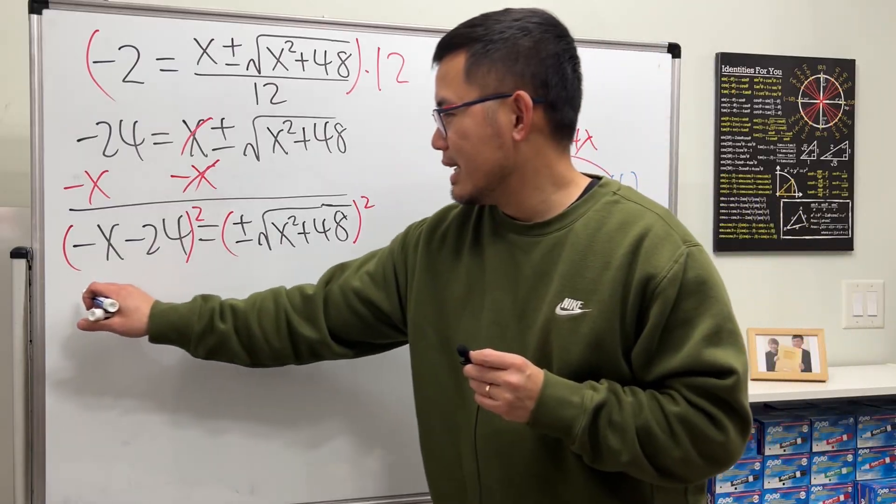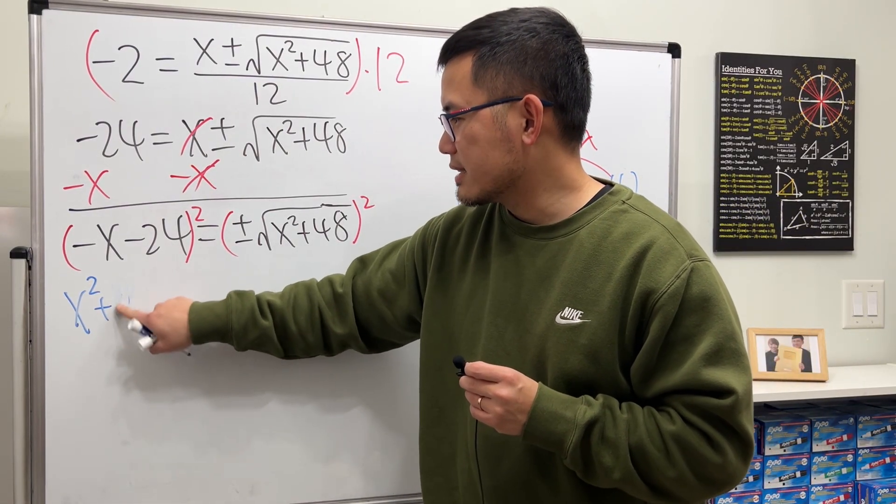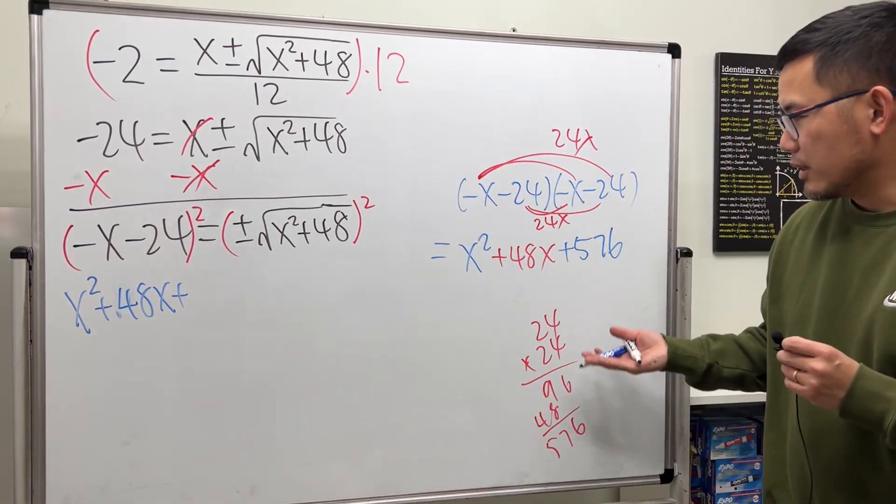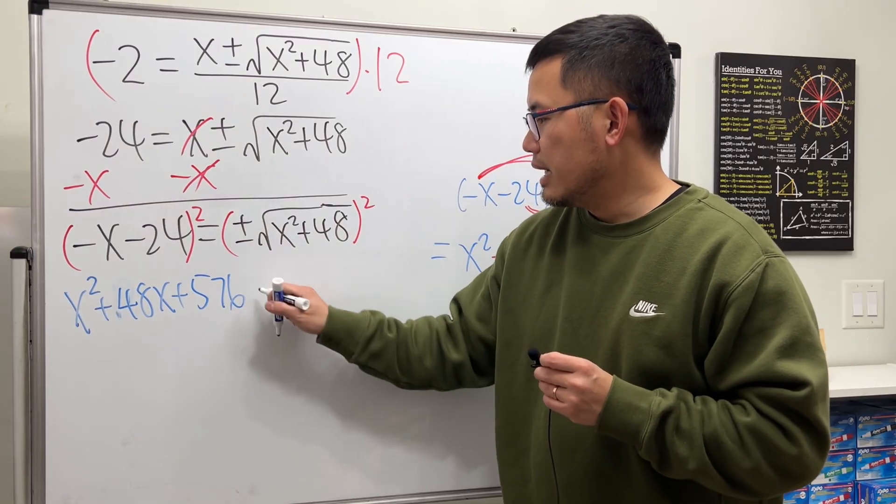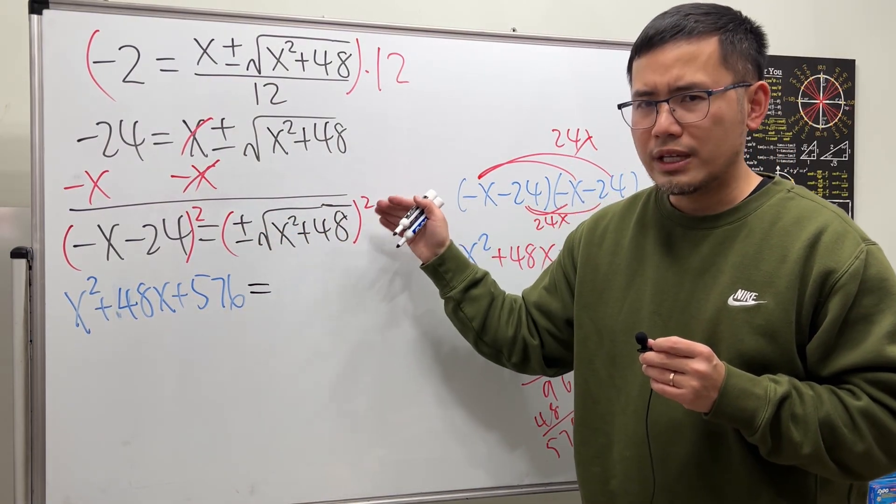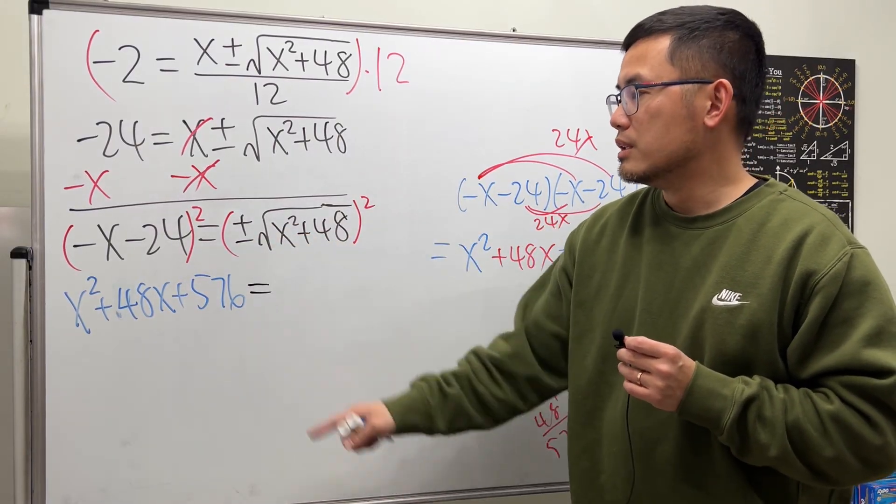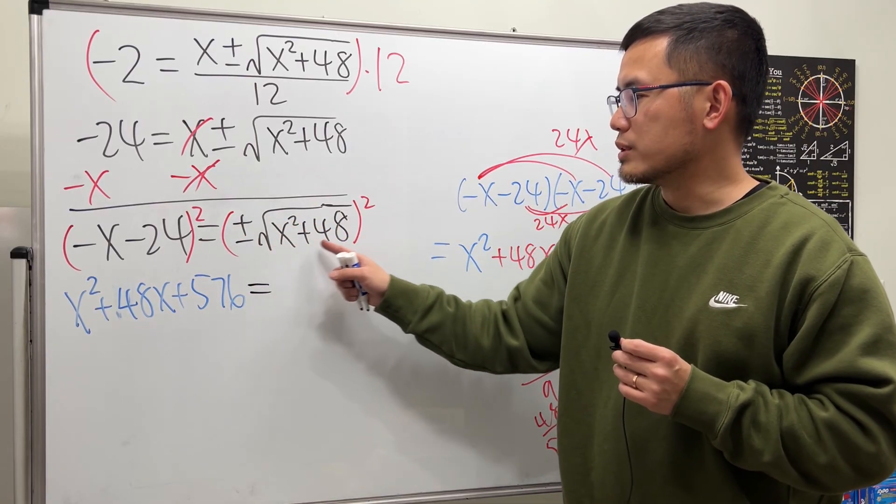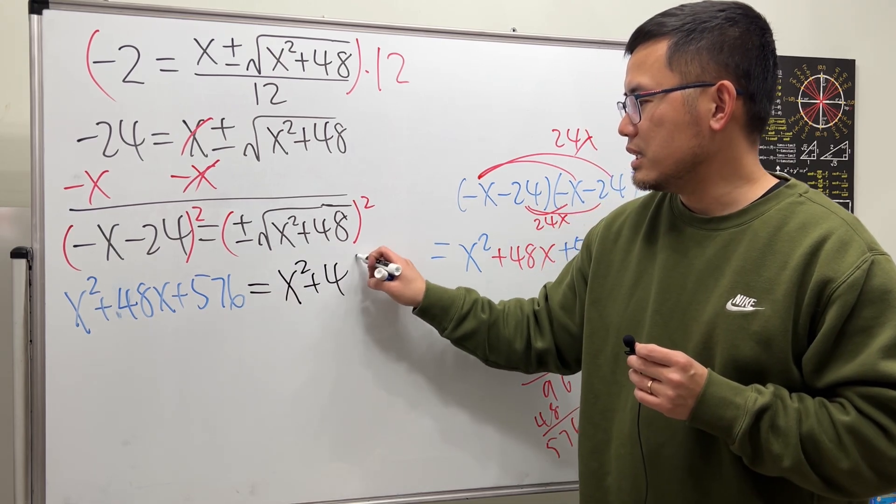So we have all that, x squared plus 48x and then plus 576. And that is equal to, well, positive, you square that, it's positive. Negative, whatever. Square that, you still get positive as well. So, doesn't matter. And square, square root cancel, we'll just have the inside, which is just x squared plus 48.